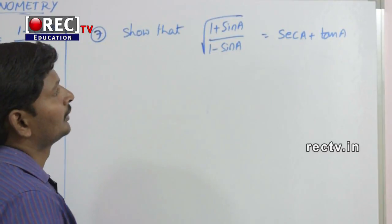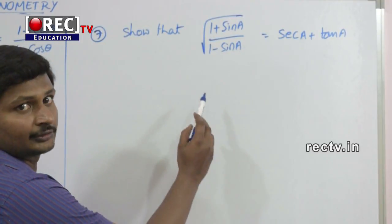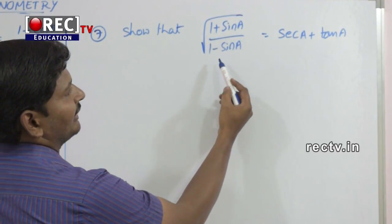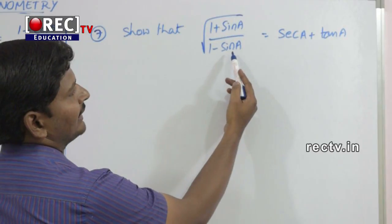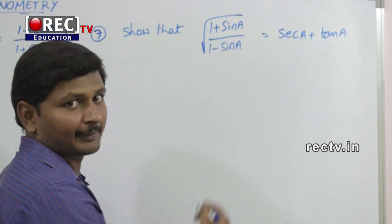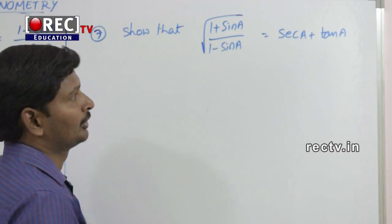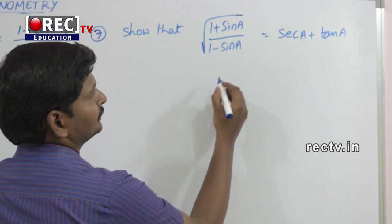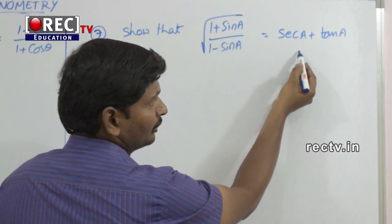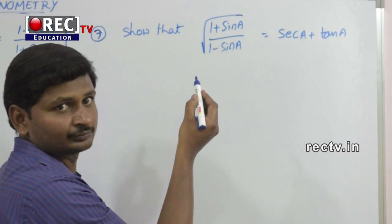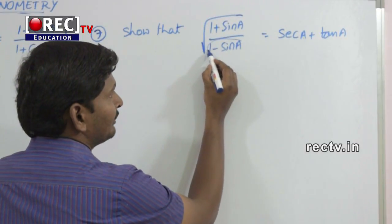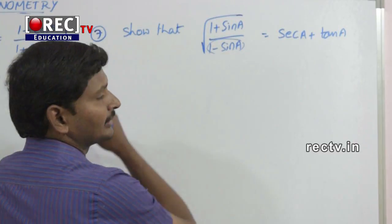Next question: show that square root of 1 plus sin a divided by 1 minus sin a is equal to secant a plus tan a. Here, there is no denominator on the right side. You have to eliminate this denominator.